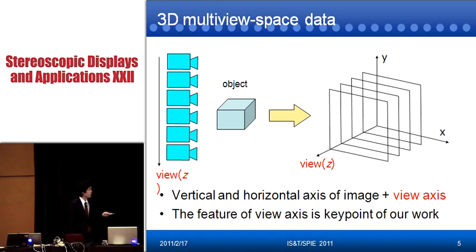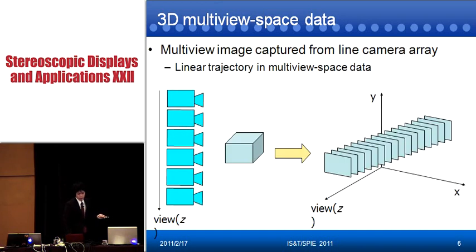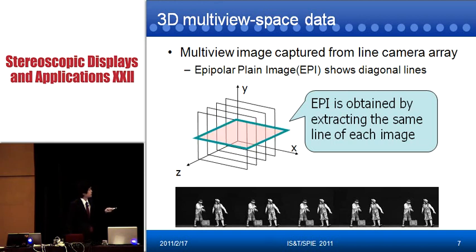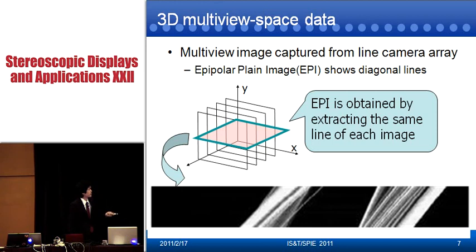The feature of the view axis is a key point. For example, multiple images captured from a line camera array make a linear trajectory in the multiple space data, like this. Looking at the actual image, multiple images captured from a line camera array give us the F4 plane image. The EPI is obtained by extracting the same line of each image. This EPI shows a diagonal line — a very simple trajectory.